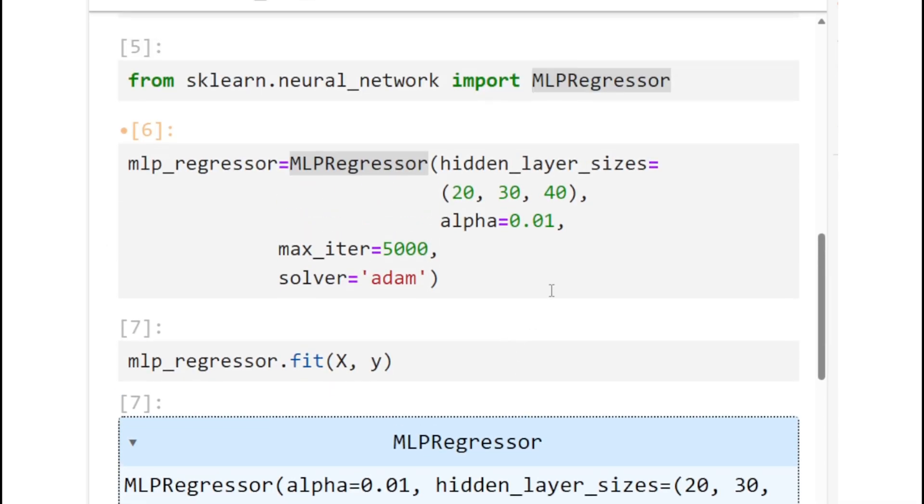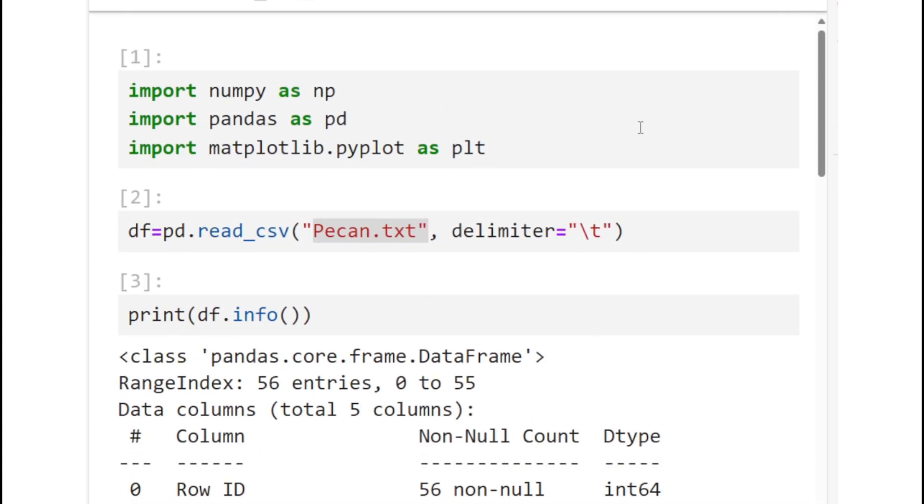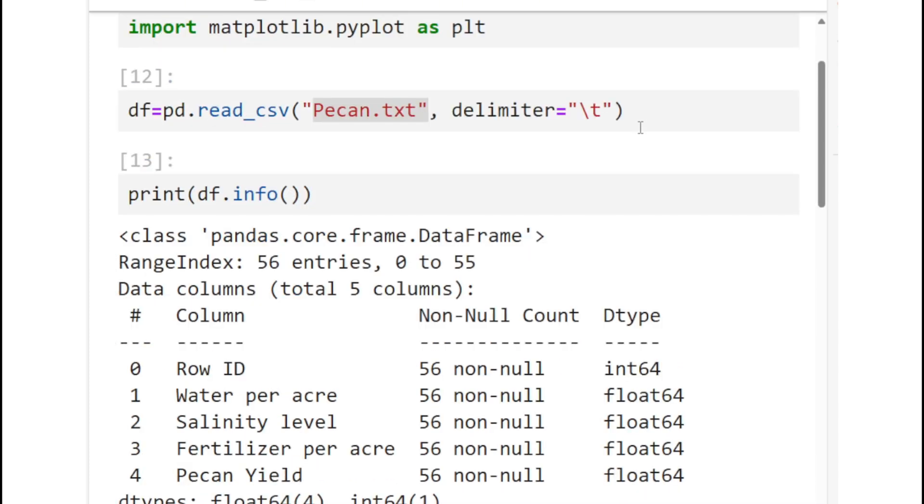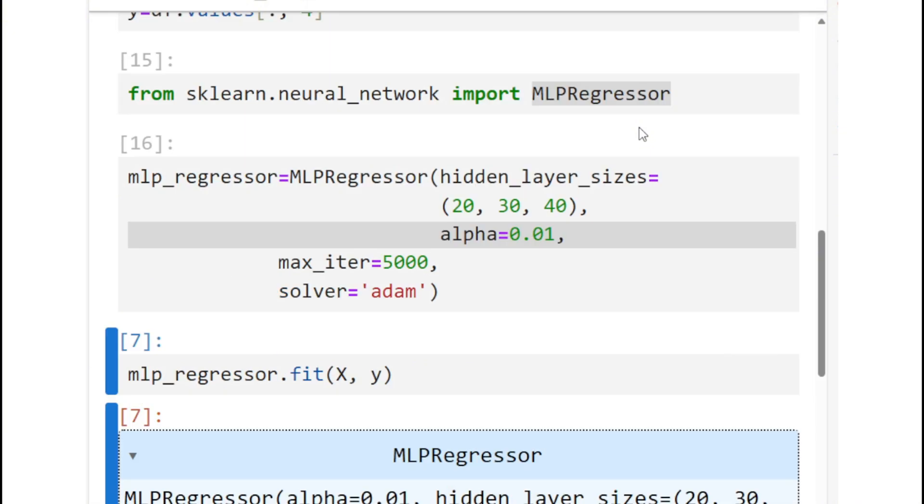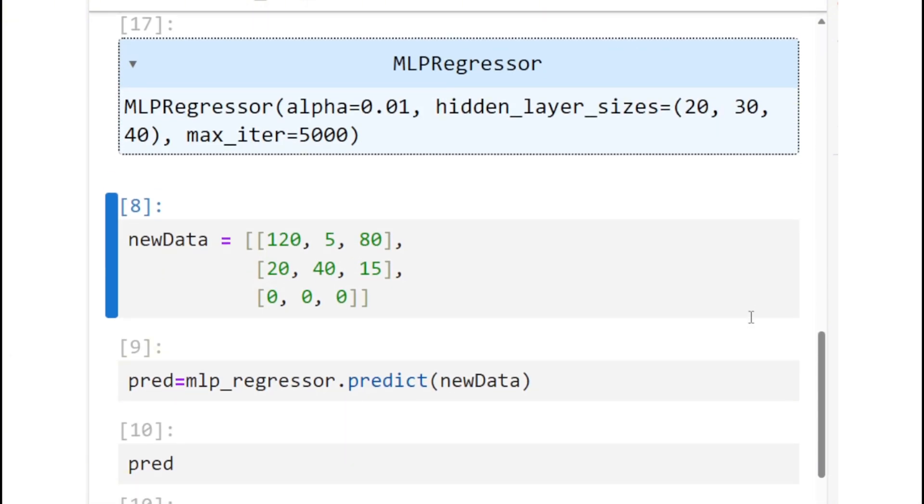MLPRegressor does not have L1 regularization. It only has L2 regularization. This was our entire code. These were the predictions. This is the only new part that I have added in the code. So let me run everything to see if anything changes.